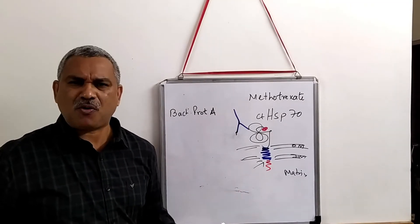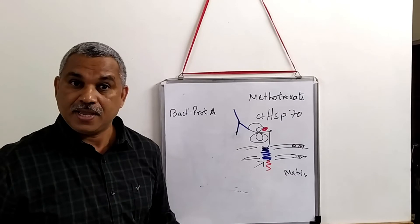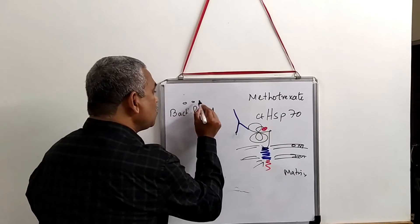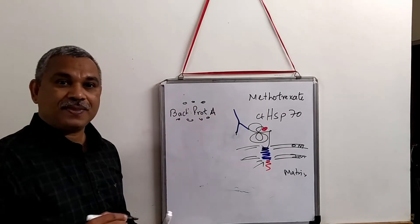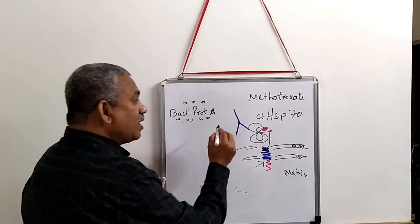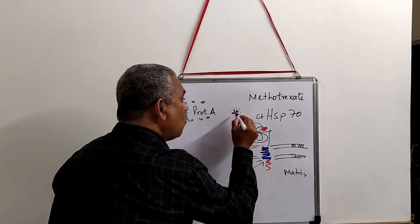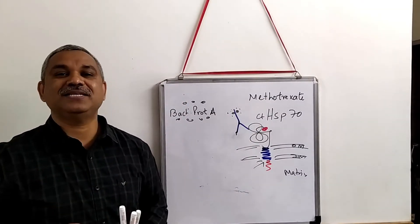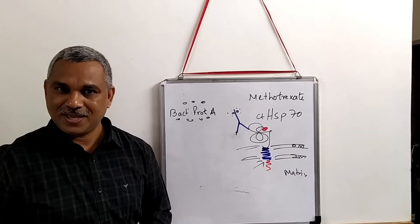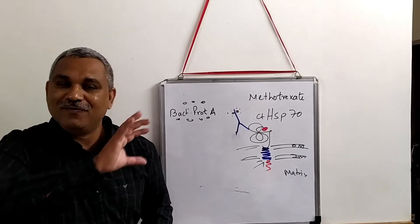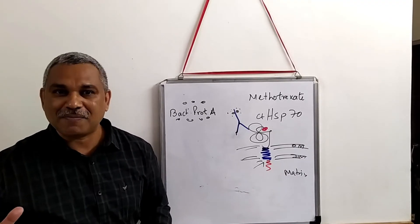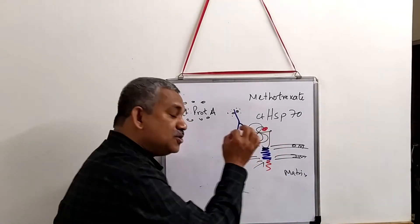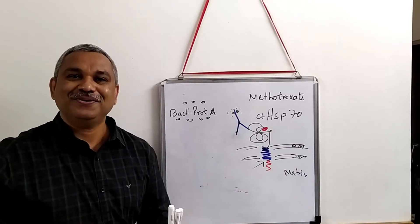This bacterial protein A is coated with gold particles and added to the system. What will happen is this protein A binds to the antibody, and the gold particles remain outside. Gold particles can easily be detected under an electron microscope. When you look through the electron microscope, you will see the outer membrane, the inner membrane, and also the gold particles — confirming whether the protein is folded and unable to pass through.